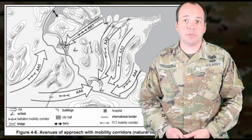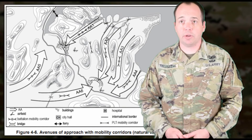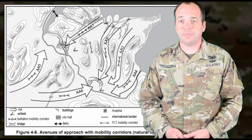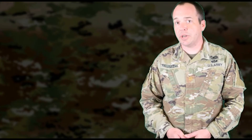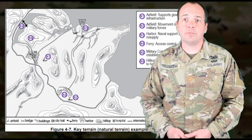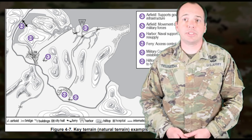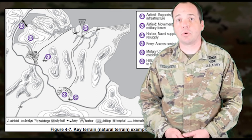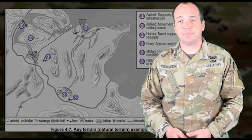Separate products are created to understand mobility corridors, key terrain, horizontal and vertical line of sight, and products depending on the requirements of your unit. For example, airborne or air assault units will also conduct terrain analysis for suitable drop zones, landing zones, or field landing strip locations within an AO.